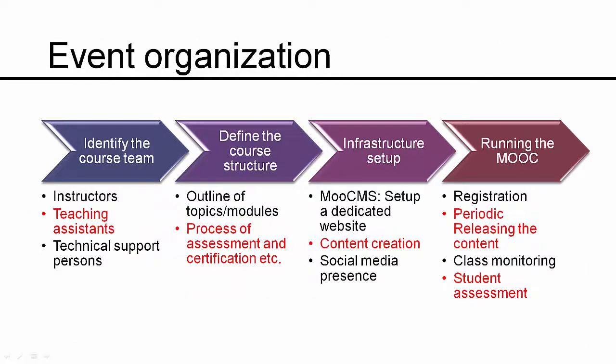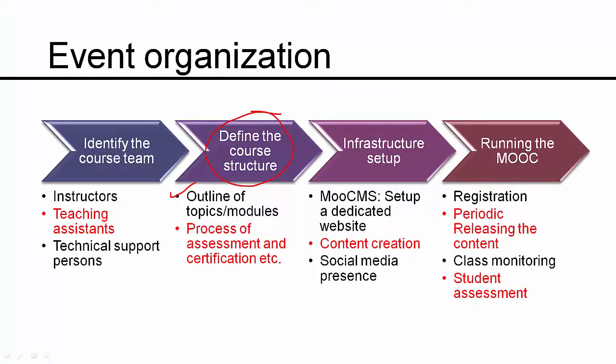Looking at event organization in more detail, you will first need to identify the course team, then look at the course structure itself — for example, the outline of various topics and modules you plan to cover in your MOOC — and then the process of assessment and certification. This defines the course structure. It's not much different from any classroom course, where you also outline topics, their order, and the assessment method.